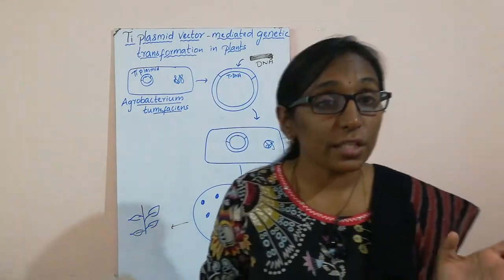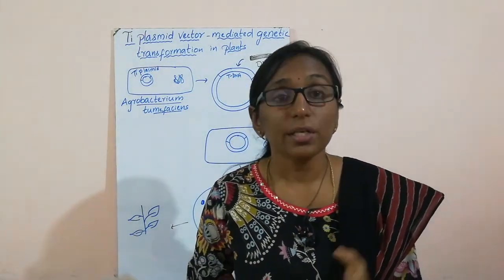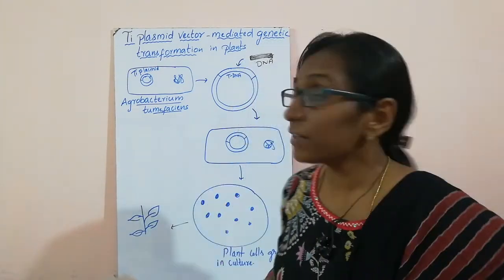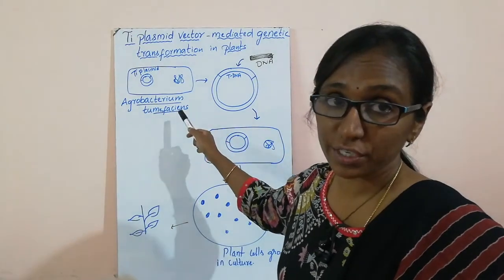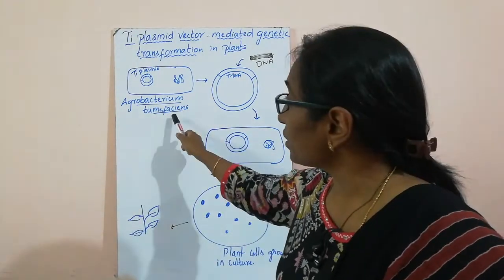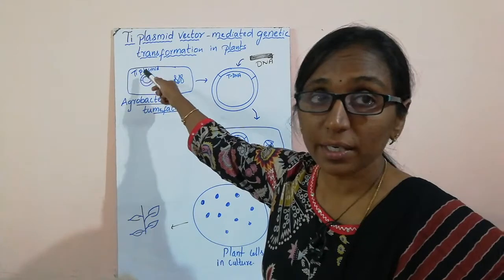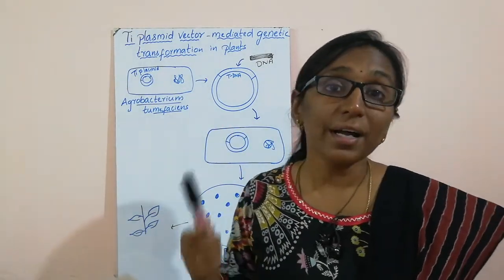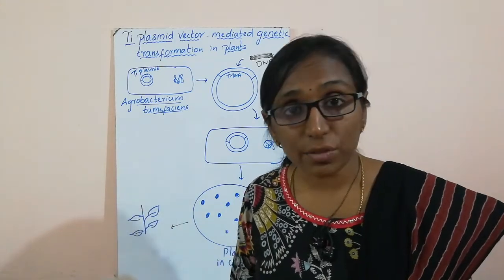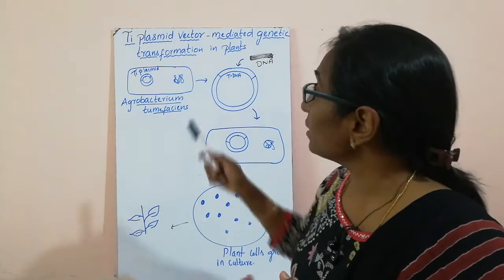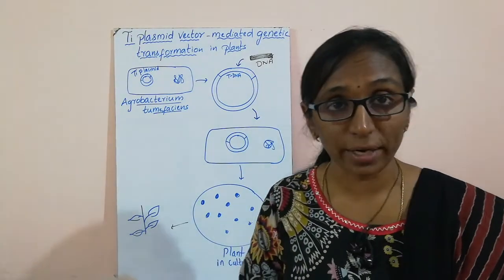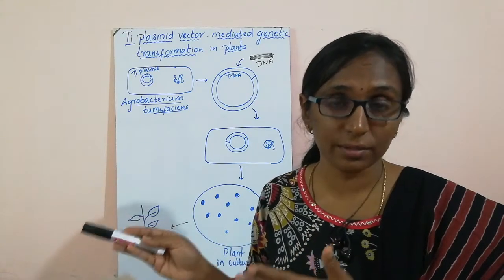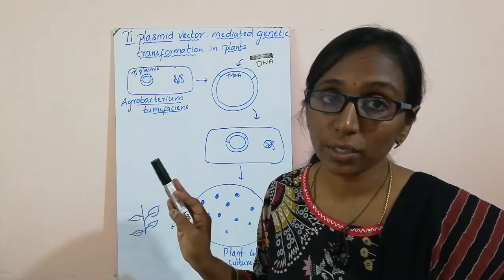The vector which is used especially in case of plant cells is called the Ti plasmid vector, which is isolated from Agrobacterium tumefaciens. Agrobacterium tumefaciens contains a plasmid called the Ti plasmid, which is used for carrying our desired DNA and introducing it into the plant cells. This is called a plant natural vector and it does not cause any harm to the plants — it is not at all pathogenic to the plant cells.